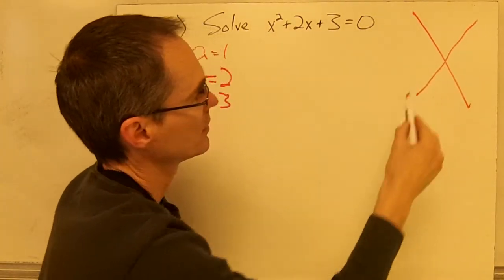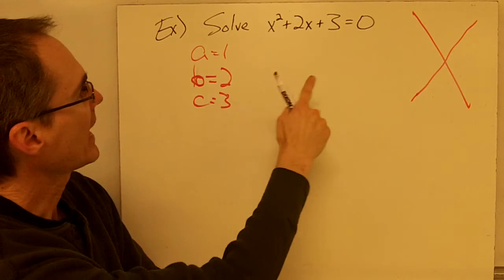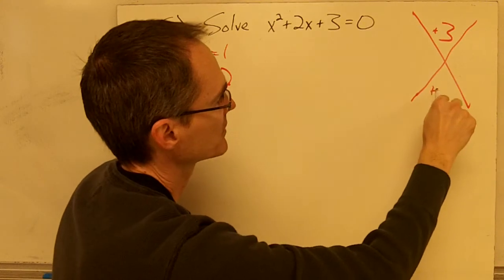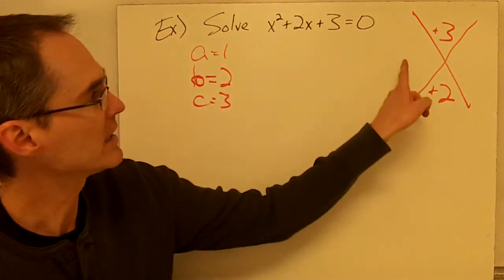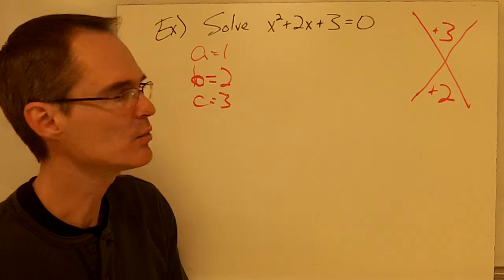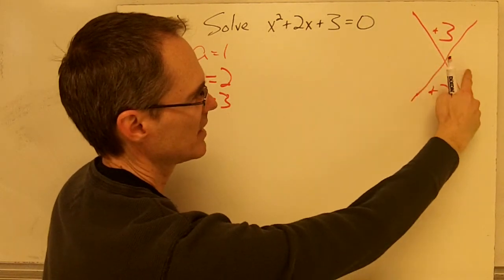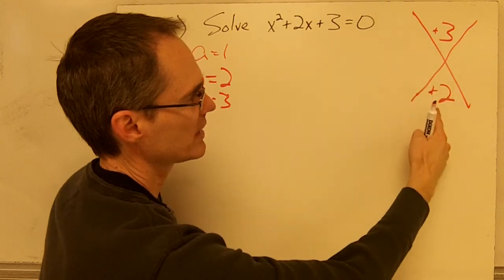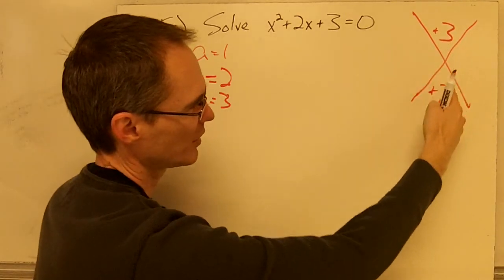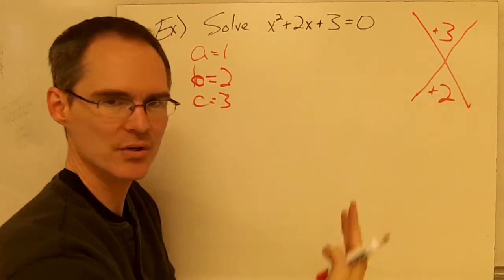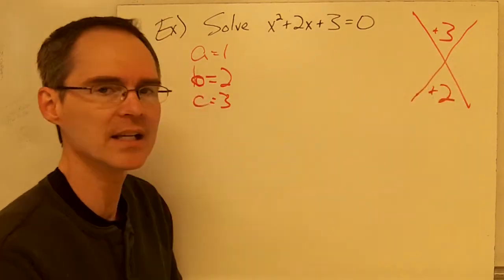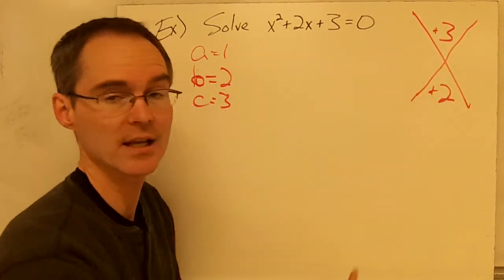I'll set up the diamond method, putting positive 3 at the top and my b value, positive 2, at the bottom. I need two numbers that multiply together to give me 3 and add together to give me 2. Right away I can see the problem — there really aren't any numbers that will do that. I'm tempted to try 1 and 3, but 1 plus 3 is 4, not 2. Even trying fractions or other numbers, I can't find any that multiply to give 3 and add to give 2.